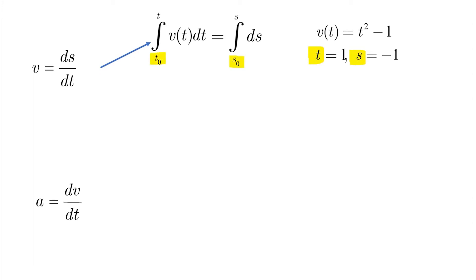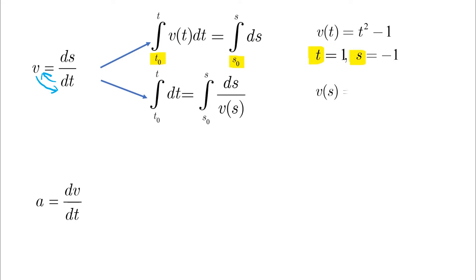The other possibility is when you have v as a function of s. In this case, v(s) goes below ds and dt goes to the other side, and we integrate both sides for dt and ds. An example will be v(s) given with t and s as boundary conditions.